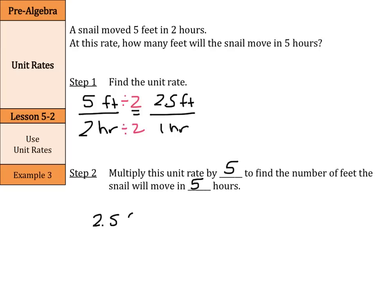So, we have 2.5 feet in 1 hour, and if we multiply that by 5 on top and bottom, the resulting answer would be 12.5 feet in 5 hours. So, the answer: how many feet will the snail move in 5 hours? 12.5 feet.